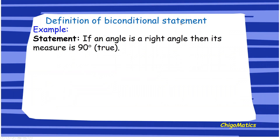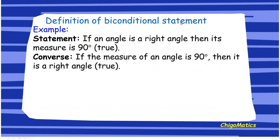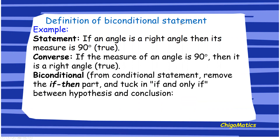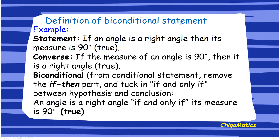Let us look at an example of a biconditional statement. The conditional statement: if an angle is a right angle, then its measure is 90 degrees — that is correct. The converse: if the measure of an angle is 90 degrees, then it is a right angle — that is also true. Since both are true, the biconditional statement is: an angle is a right angle if and only if its measure is 90 degrees.